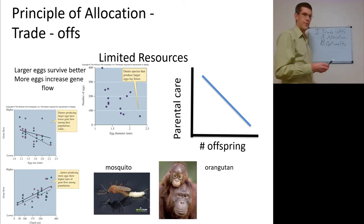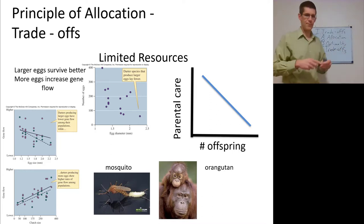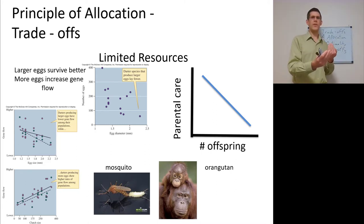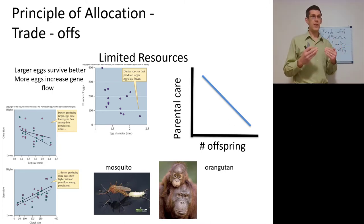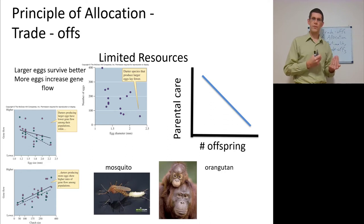Mosquitoes lay a very large number of eggs, and larger eggs survive a little bit better, but more eggs increase gene flow. This is a trade-off: having more eggs versus having bigger eggs. A lot of small eggs means not all survive, but the strongest — best adapted — do. Alternatively, larger eggs give offspring a better competitive edge and better survival. So mosquitoes that lay more or fewer eggs are under selection for gene flow versus survivorship.